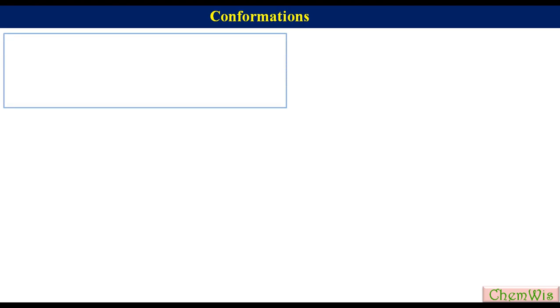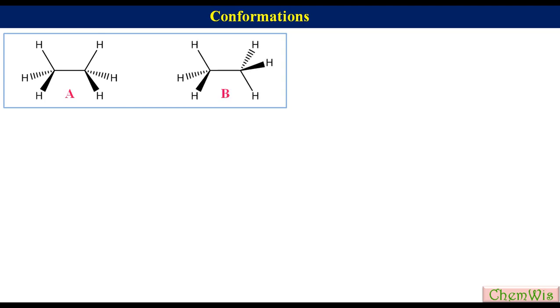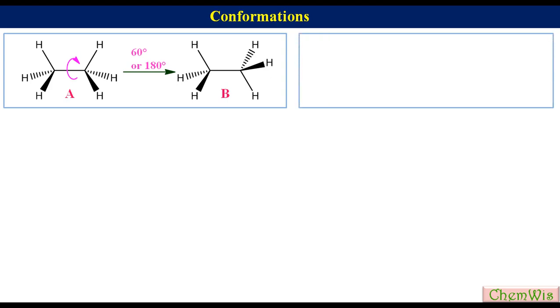These spatial arrangements can be interconverted by rotation about the single bond. For example, two spatial arrangements of ethane, A and B: A can be converted into B by just 60 or 180 degrees clockwise rotation of the right-side carbon about the C-C single bond. Spatial arrangements C and D of 1,3-butadiene: C can be converted into D by just 180 degrees rotation of the right-side carbon about the C-C single bond.